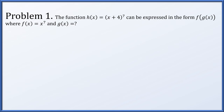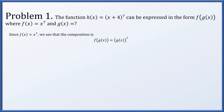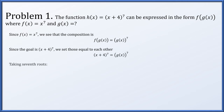First up, the function h(x) = (x+4)^7 can be expressed in the form f(g(x)), where f(x) = x^7 and g(x) is what we need to find. Since f(x) = x^7, whatever you plug into f is raised to the 7th power. Therefore, f(g(x)) will be g(x)^7. We want to end up with (x+4)^7, so setting those equal gives us g(x) = x + 4.